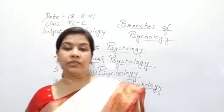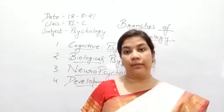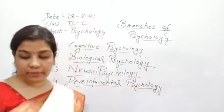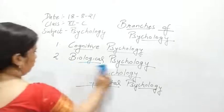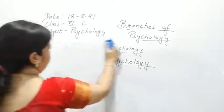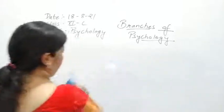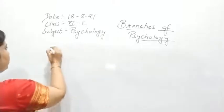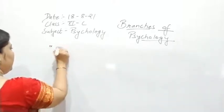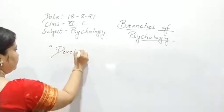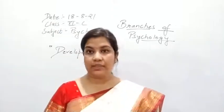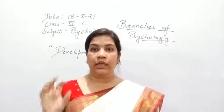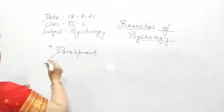So the branches discussed so far are: cognitive psychology, biological psychology, neuropsychology, and developmental psychology. Please note these down. You should also write down the meaning of development. Human development is progressive, orderly, and predictable changes that take place in a person's life from conception till death.